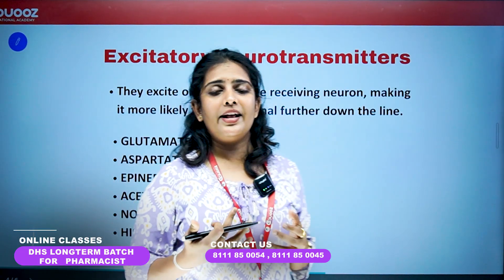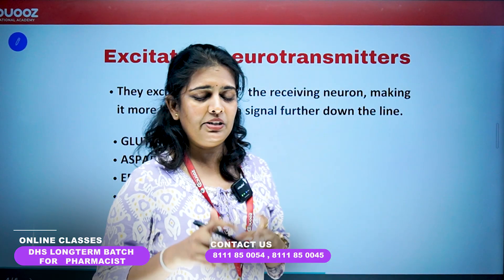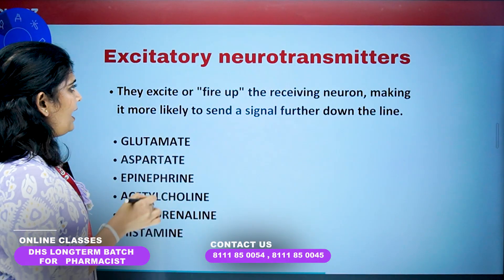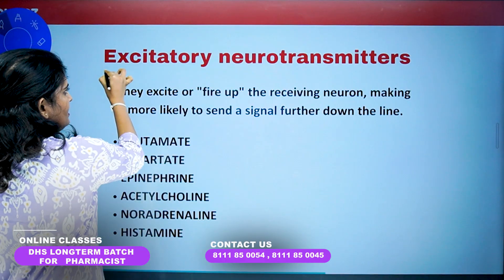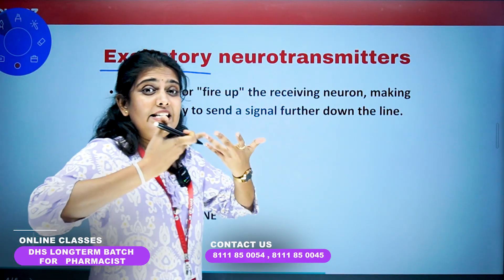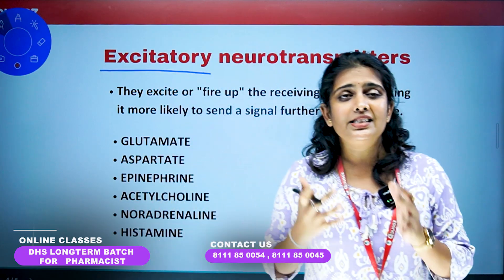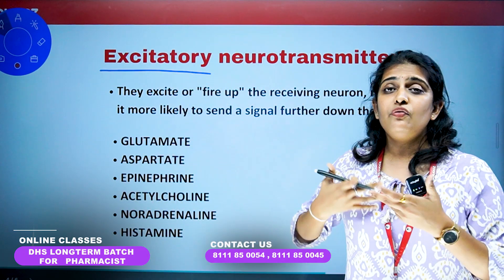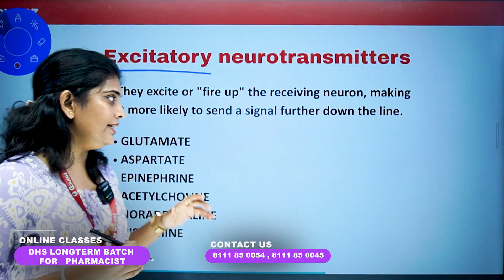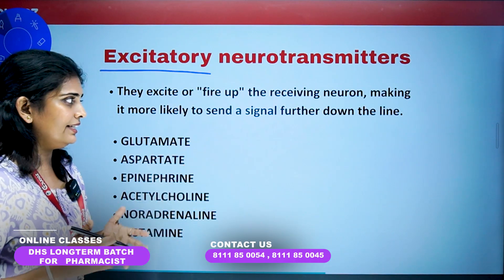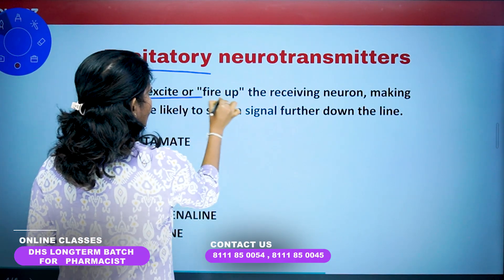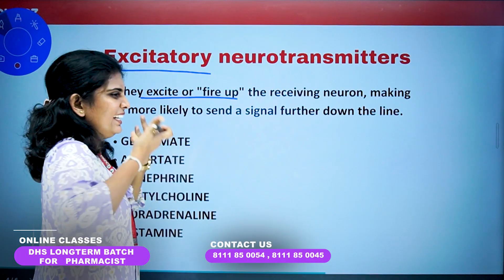From an exam point of view, excitatory and inhibitory neurotransmitters are very important. Excitatory neurotransmitters are something which increase activity — they excite or fire up the receiving neuron, making it more likely to send a signal further down the line. That is the main function of excitatory neurotransmitters.